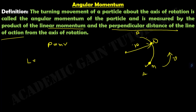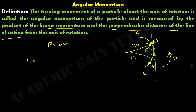To measure the perpendicular distance of the line of action, we draw a tangent. The tangent creates an angle theta at that point. The perpendicular distance of the line of action is R sin theta. If we calculate this value, it equals R sin theta.